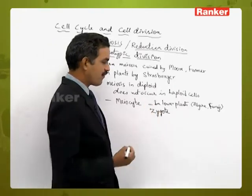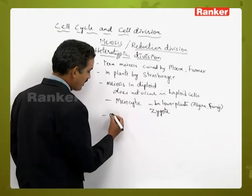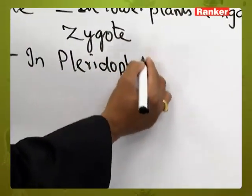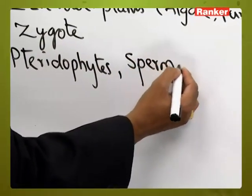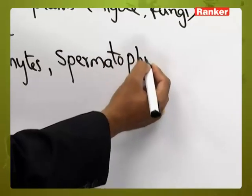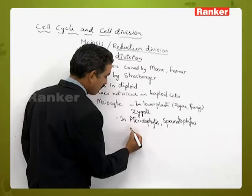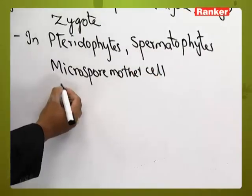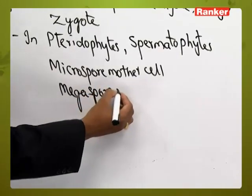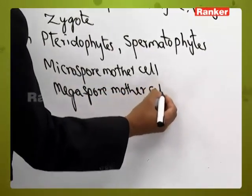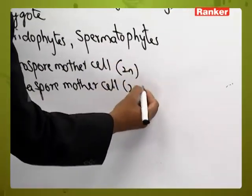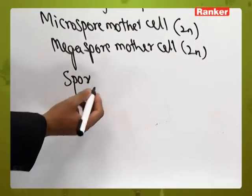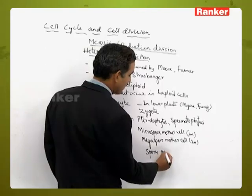In bryophytes, the same type of character can be observed. When it comes to tracheophytes and spermatophytes — which means angiosperms and gymnosperms — both the micro spore mother cell and the mega spore mother cell are in diploid condition and both act as meocytes. In some tracheophytes where there is no differentiation between micro spores and mega spores, it is called the spore mother cell, and these also act as meocytes.